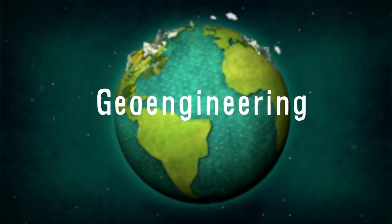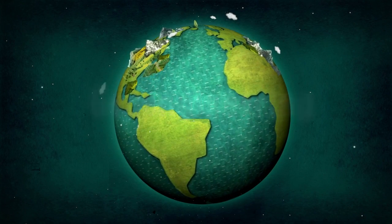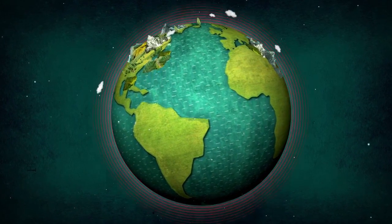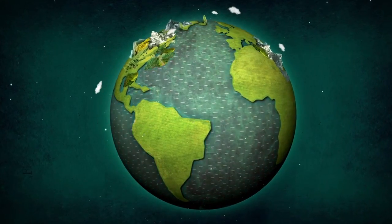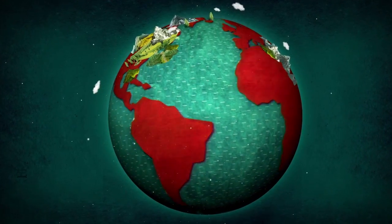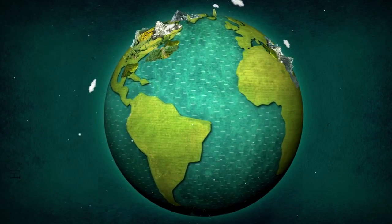Geoengineering is a term used to describe large-scale targeted intervention in the Earth's atmosphere, the oceans and the biosphere. There are two basic directions that technological manipulation of the climate could take.